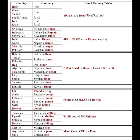The first mnemonic covers Brazil, Oman, Yemen, Saudi Arabia, Iran, and Qatar — all Muslim countries. The currency for all of them is the Real. The mnemonic is the word BOYS: B for Brazil, O for Oman, Y for Yemen, S for Saudi Arabia — they all have Real as their currency. IQ refers to Iran and Qatar, which also use the Real.